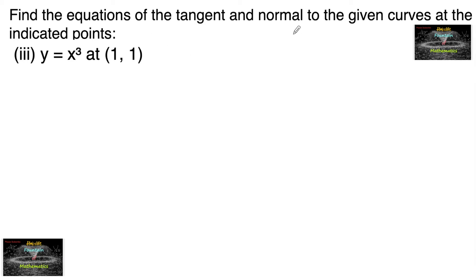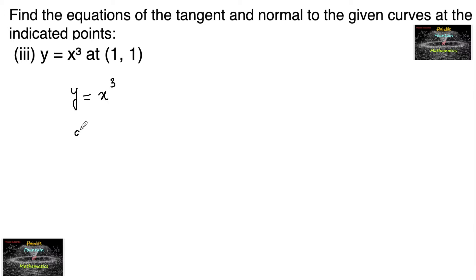Find the equations of the tangent and normal to the given curve at the indicated point. The given curve is y = x³. To find the equation of a tangent, we need the slope of the tangent. Since the point (1, 1) is given, we can use point-slope form. The slope of the tangent is found by differentiating with respect to x, giving us 3x².